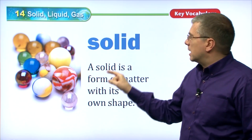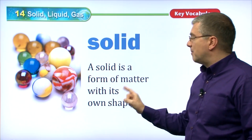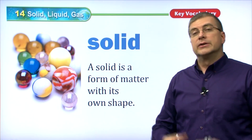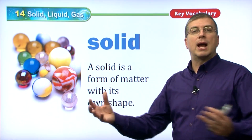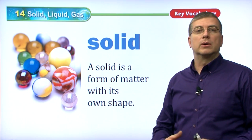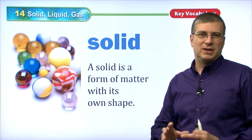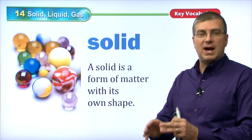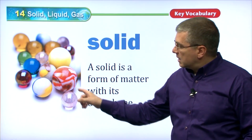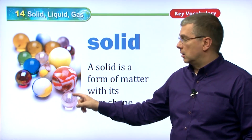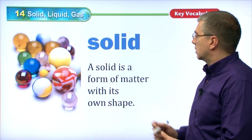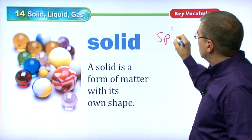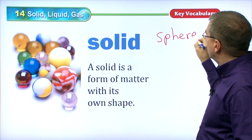What is a solid? A solid is a form of matter with its own shape. So if a certain type of matter out there in the world has its own specific shape — it has a shape that is defined, it's a triangle, it's a sphere — that's the shape here that we see of these marbles.